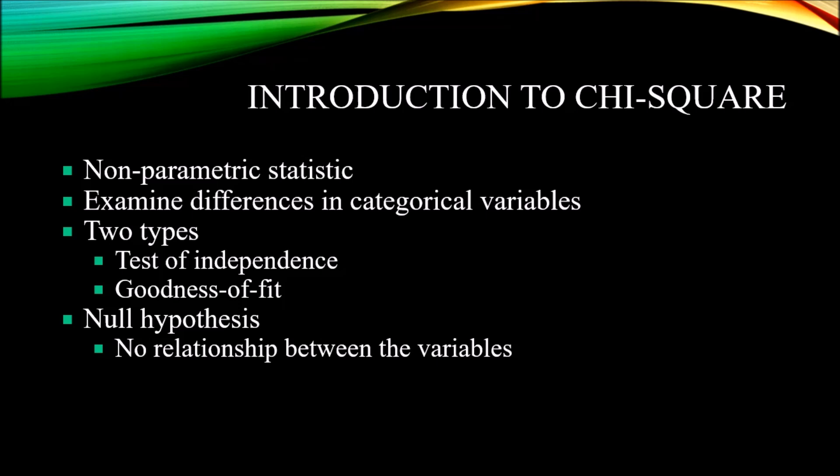The chi-square is used to examine differences in categorical variables, and it comes in two types: test of independence and goodness of fit. We use the test of independence when we have two variables and we want to see if there's a relationship between those variables. We use the goodness of fit when we have one variable, one set of observations, and we want to compare that to the expected observation.